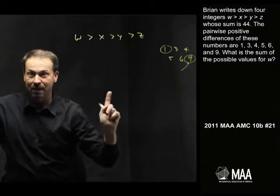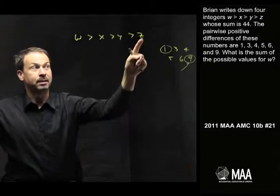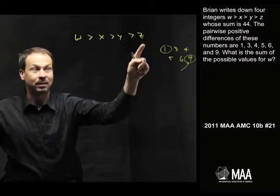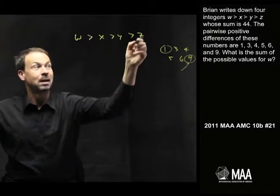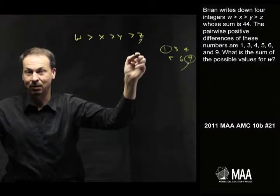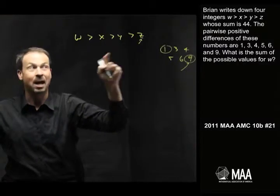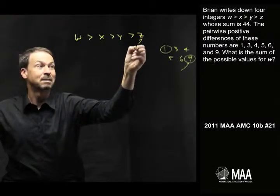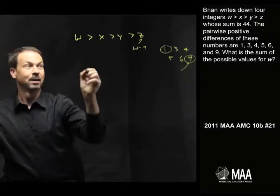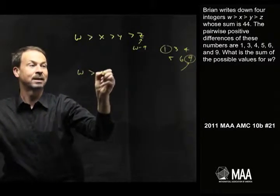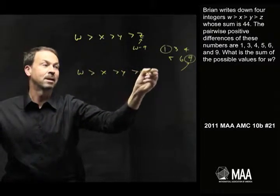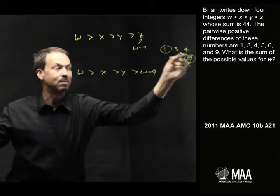Alright, now, the question's about w. So I could write z in terms of w, or w in terms of z, but since the question's about w, let me write z in terms of w must differ from w by 9, and be smaller in this case. So z must be w minus 9. Alright, so our numbers are w is greater than x, greater than y, greater than w minus 9, and we've dealt with the extreme difference of 9.